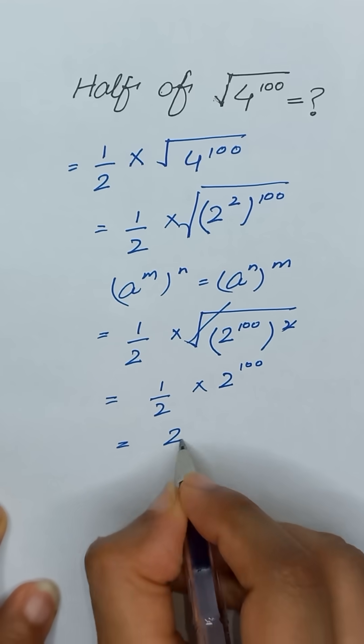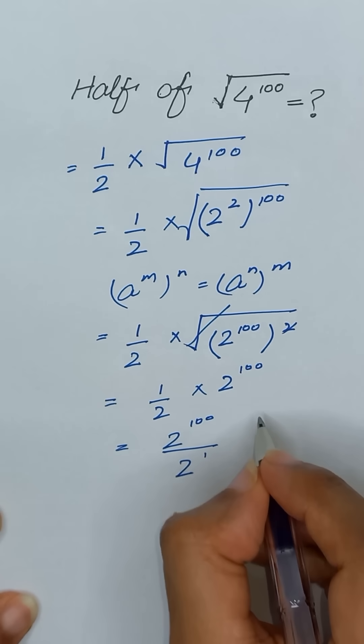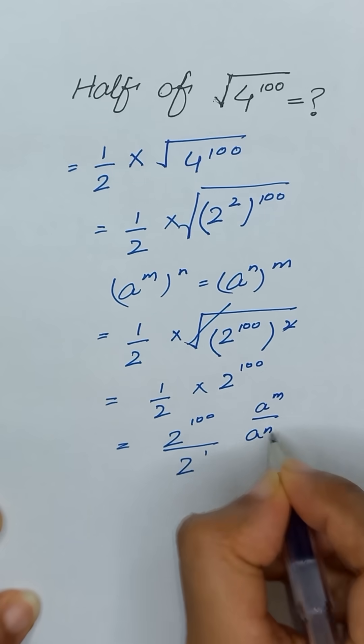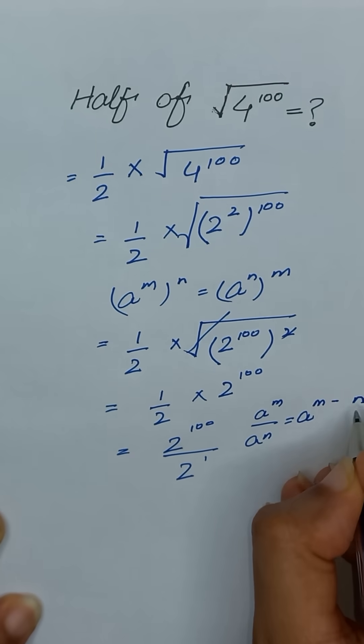You can also write it as 2 to the power 100 divided by 2. 2 is same as 2 to the power 1 and we know that a to the power m divided by a to the power n is equal to a to the power m minus n.